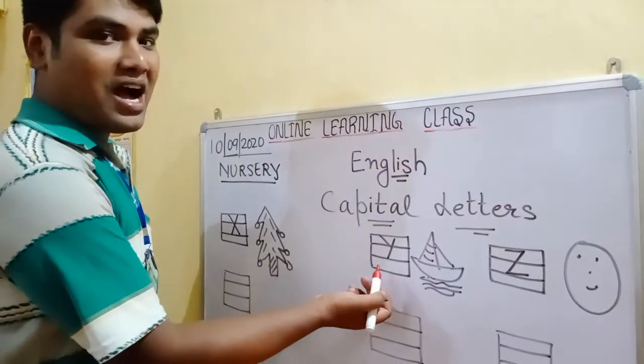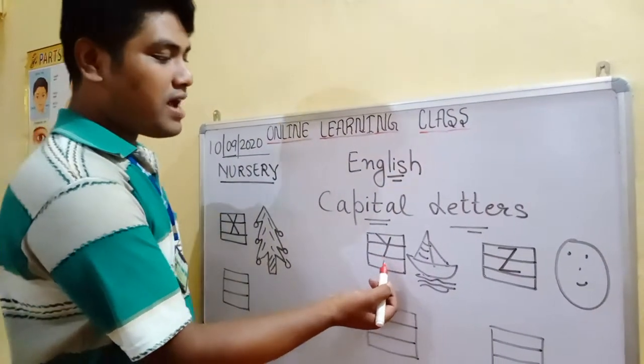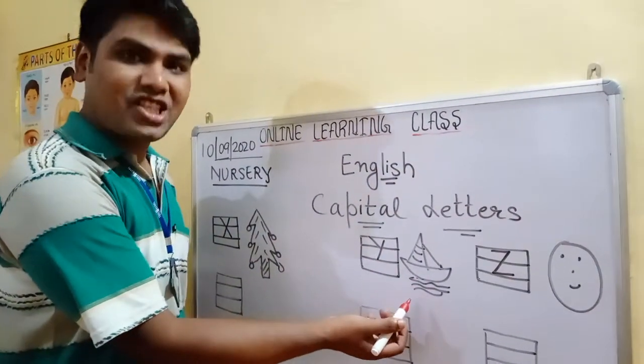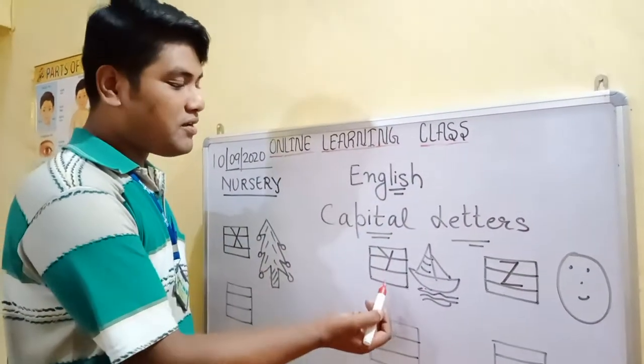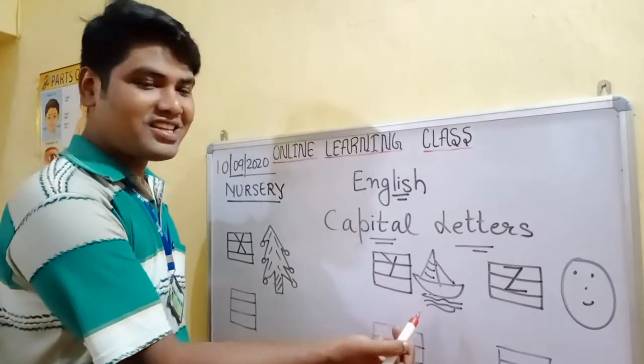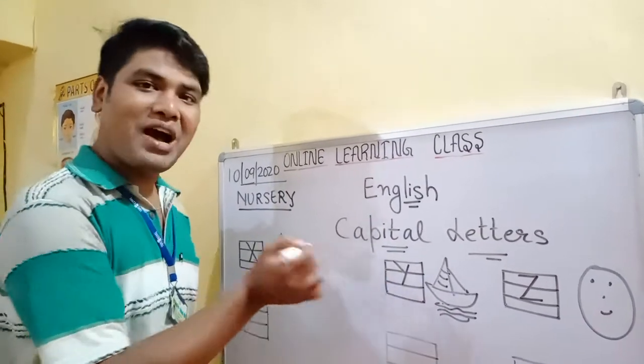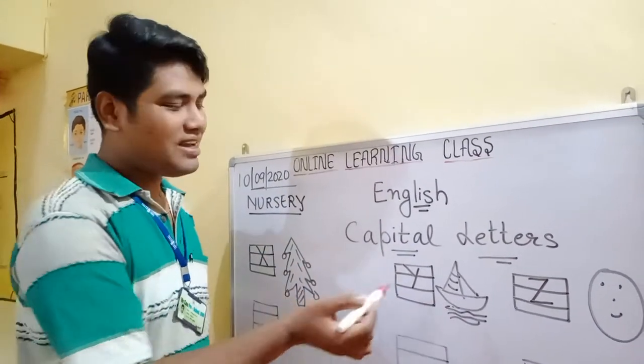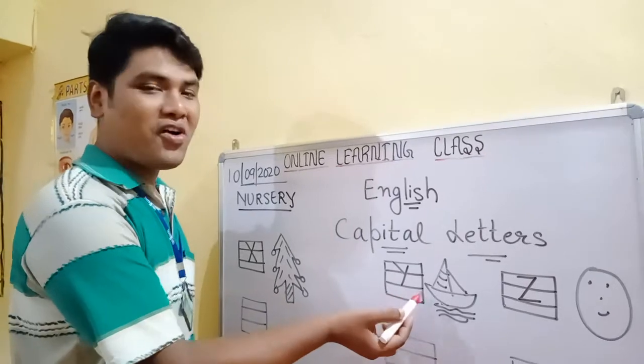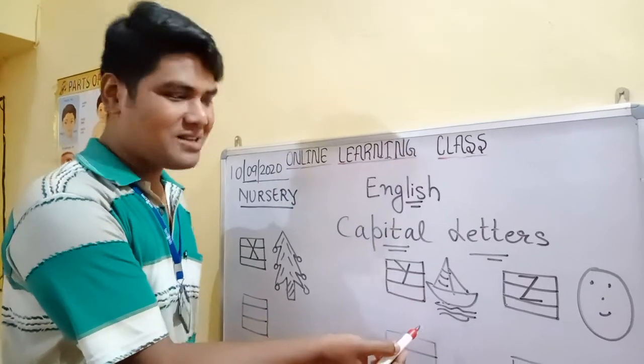Now Y. Y for Yacht. It is like a small boat. Ye ek chhoti si nao ki tara vatih hai. Y for Yacht.